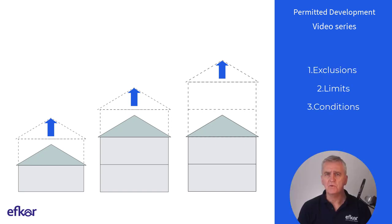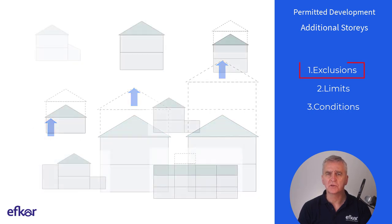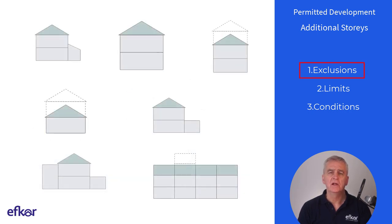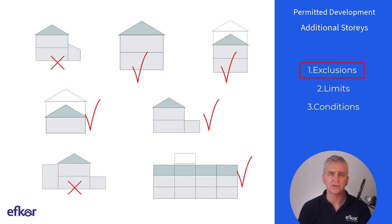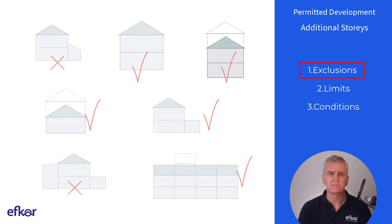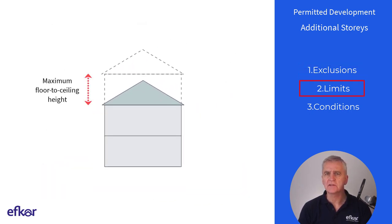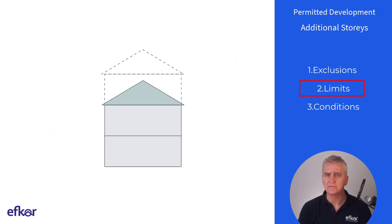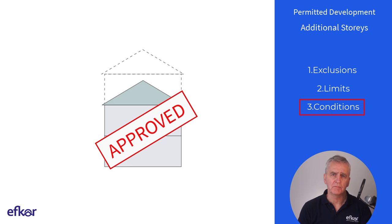This video has three sections. Exclusions, looking at which houses are excluded from eligibility for additional stories. Limits, examining the detail of what can actually be built. And conditions, looking mostly at how to engage with the planning authority.